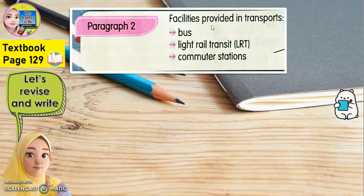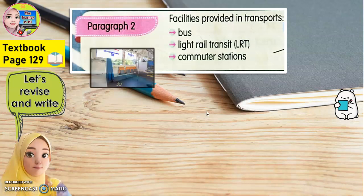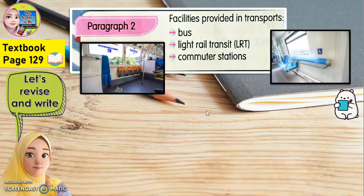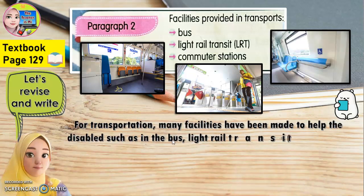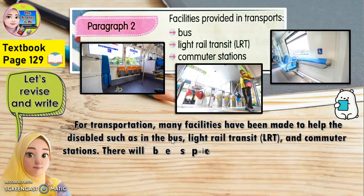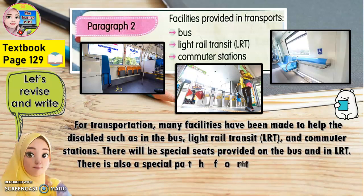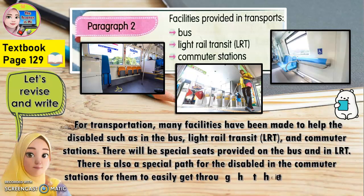In paragraph 2, facilities provided in transport such as bus, light rail transit, LRT, and commuter stations. For transportation, many facilities have been made to help the disabled such as in the bus, LRT, and commuter stations. There will be special seats provided on the bus and in LRT. There is also a special path for the disabled in the commuter stations for them to easily get through the ticket scanner terminal.